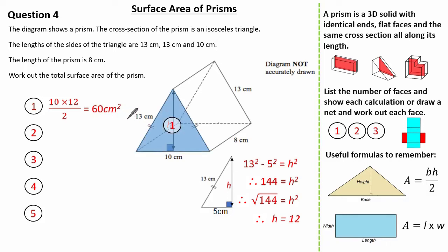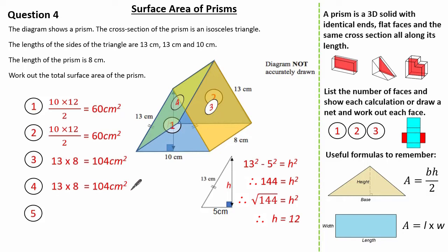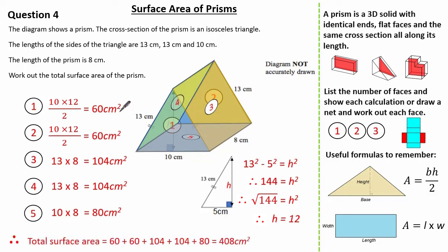Face 2 is identical to face 1, so it's also 60 cm². Face 3 is a 13 by 8 cm rectangle, giving 104 cm². Face 4 is also 13 by 8, giving 104 cm². Face 5 is a 10 by 8 cm rectangle giving 80 cm². Therefore the total surface area is the sum of all five faces, giving 408 cm².